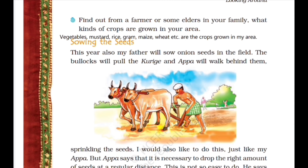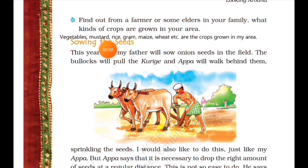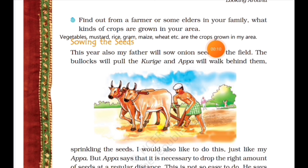Find out from a farmer or elders in your family what kinds of crops are grown in your area. Vegetables, mustard, rice, gram, maize, wheat, etc. are the crops grown in my area.